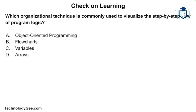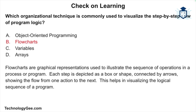Final question: which organizational technique is commonly used to visualize the step-by-step flow of program logic — object-oriented programming, flowcharts, variables, or arrays? The correct answer is flowcharts. Flowcharts are graphical representations used to illustrate the sequence of operations in a process or program. Each step is depicted as a box or shape connected by arrows showing the flow from one action to the next, helping visualize the logical sequence of a program.